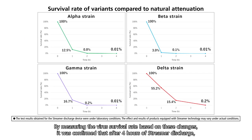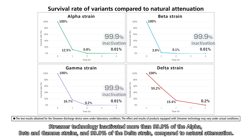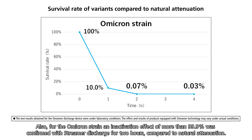By measuring the virus survival rate based on these color changes, it was confirmed that after four hours of streamer discharge, streamer technology inactivated more than 99.9% of the Alpha, Beta, and Gamma strains and 99.8% of the Delta strain compared to natural attenuation. Also, for the Omicron strain, an inactivation effect of more than 99.9% was confirmed with streamer discharge for two hours compared to natural attenuation.